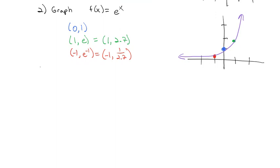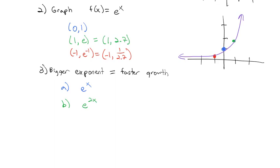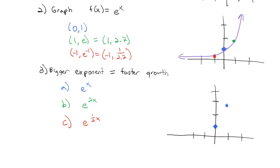What's important to note about these exponents is that a bigger exponent means faster growth, and similarly a smaller exponent means smaller growth. If we wanted to graph three functions — e^x, e^(2x), and e^(x/2) — we'd notice the bigger the exponent the faster the growth. e^x goes through (0, 1), (1, 2.7), and (−1, a little less than one-third).